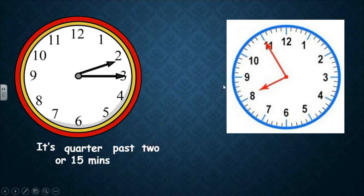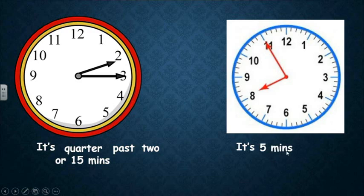Another example. Don't forget — look at the long hand first. The long hand is on eleven. So the minutes will be five minutes. The long hand is in the 'to' part, because eleven is on the left side. The hours is eight. So the time here is it's five minutes to eight.